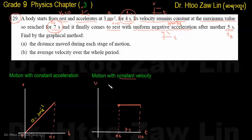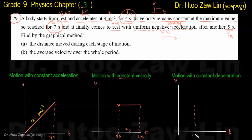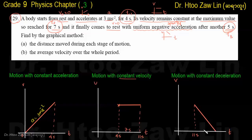During the constant velocity phase, motion continues uniformly. Then the object comes to rest, entering negative acceleration. The negative acceleration phase lasts 5 seconds, and the acceleration value is given for 30 seconds total motion.